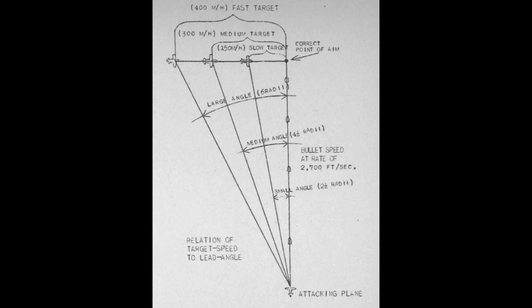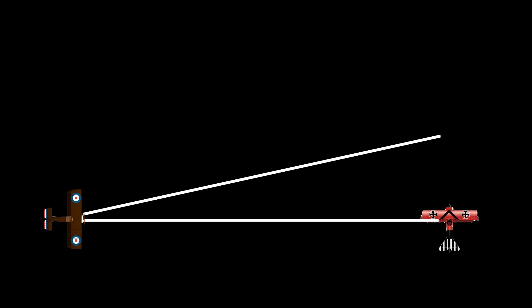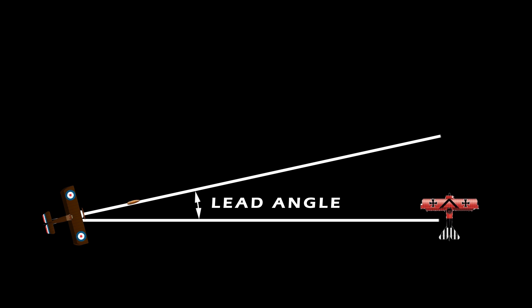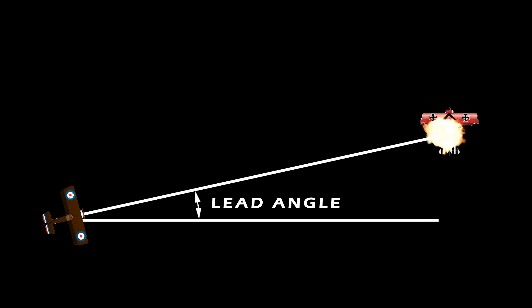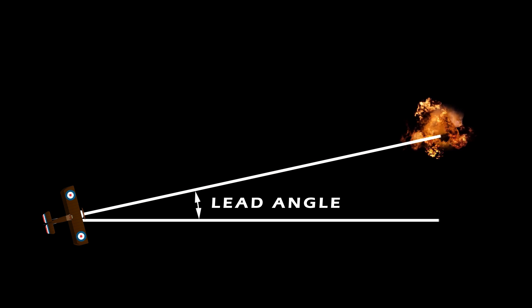Lead angle is calculated by accounting for their craft's motion, the target's motion, the target range, and the projectile time of flight. The resulting angle is the lead required to hit the target, assuming they don't change course.